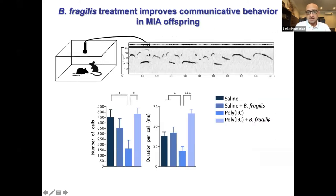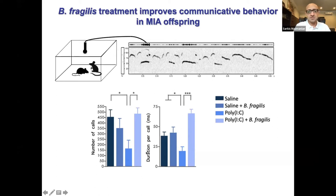We're also quite pleased to see that Bacteroides fragilis improved behavioral symptoms in these same animals. We looked at ultrasonic vocalization — how rodents communicate with each other, detected through an ultrasonic microphone. Animals that are offspring of poly-IC injected mothers call less — both the number of calls and duration of calls are reduced. When poly-IC offspring were orally given Bacteroides fragilis, both the number and duration of calls were improved back to control or healthy levels.